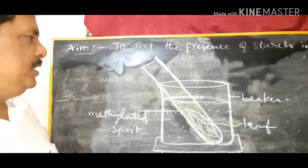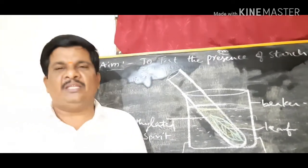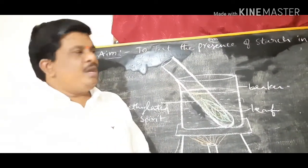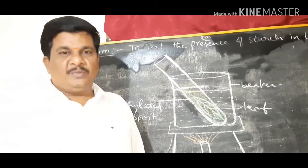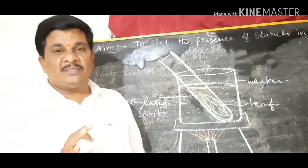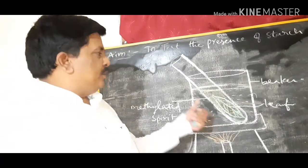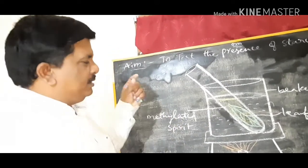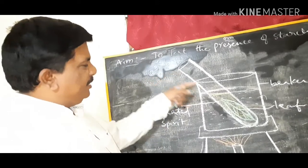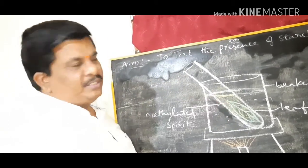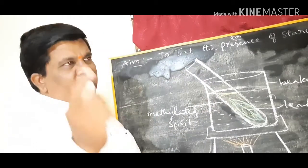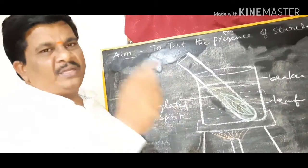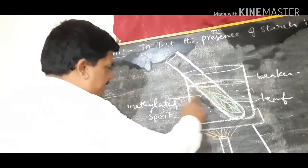In this experiment, first of all, we have to take a healthy potted plant. That plant you should keep in the sunlight for a few hours. During this time, the plant performs photosynthesis and prepares starch. To test the presence of starch, we have to select one leaf from the plant. The selected leaf you have to remove from the plant and keep it in the test tube which contains methylated spirit.